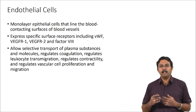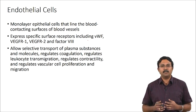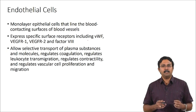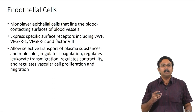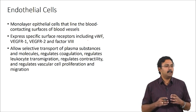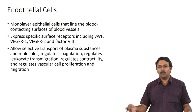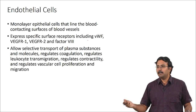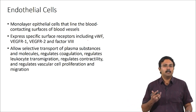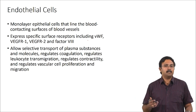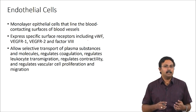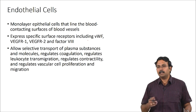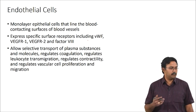Endothelial cells are monolayer cells that line the blood-contacting surfaces of blood vessels. They express specific surface receptors including von Willebrand factor (VWF), VWF receptor 1 and receptor 2, and factor 8, all involved in angiogenesis or blood homeostasis. They allow selective transport of plasma substances, regulate coagulation, leukocyte transmigration, contractility, and vascular cell proliferation and migration.